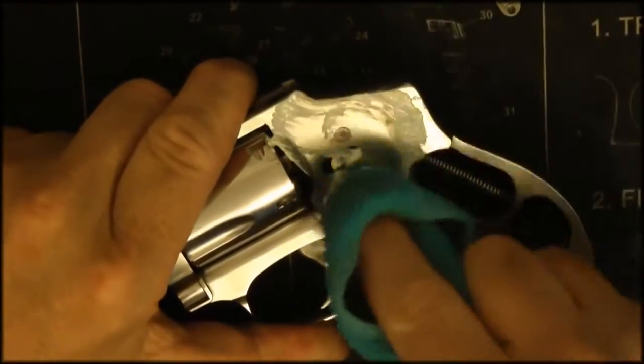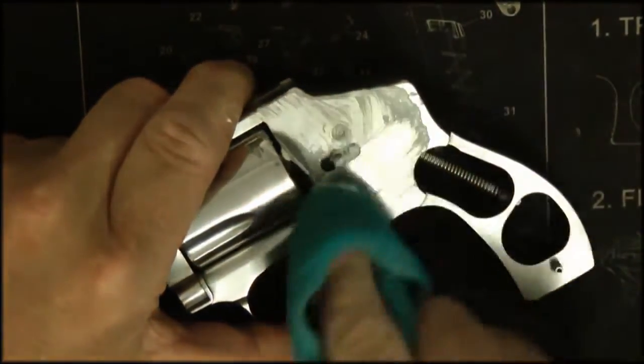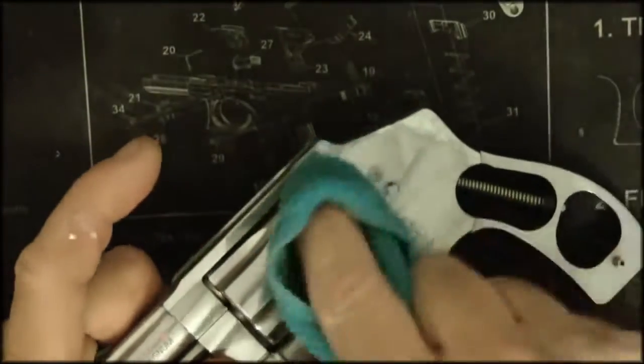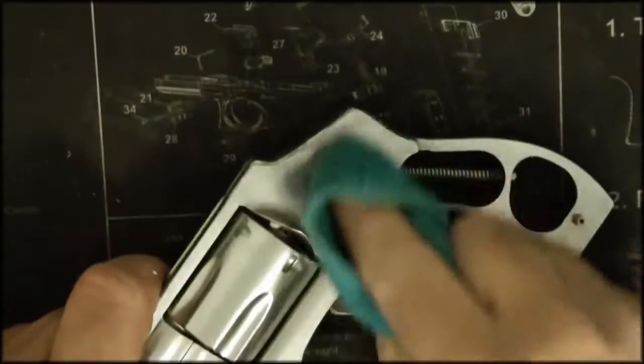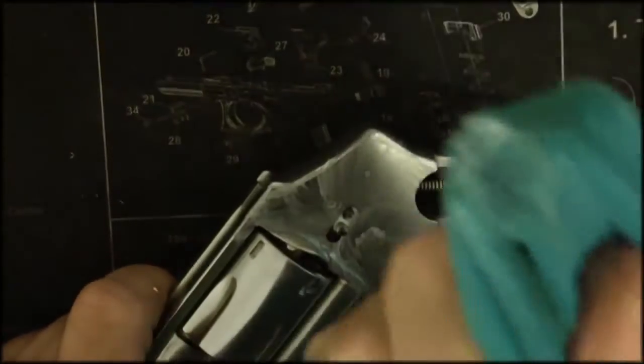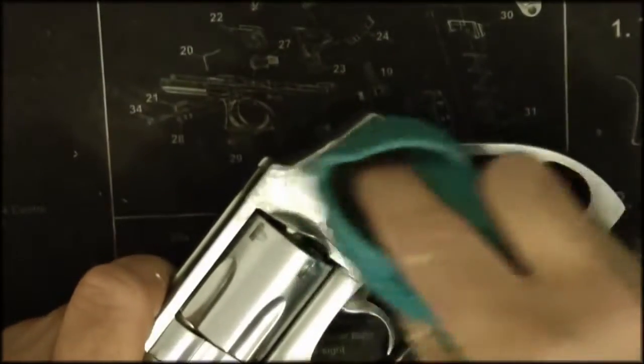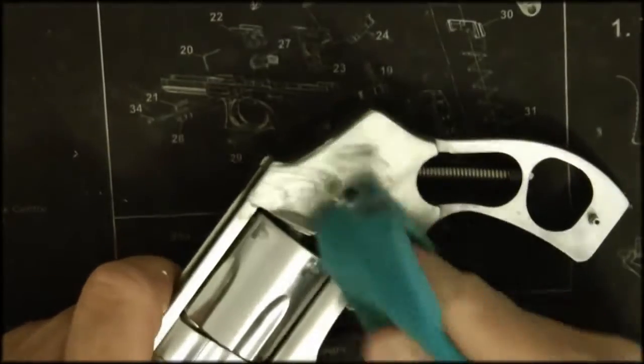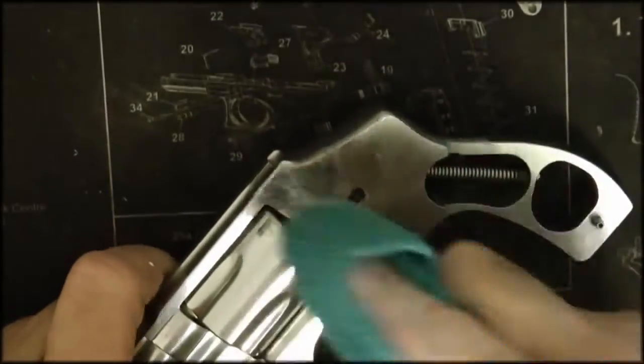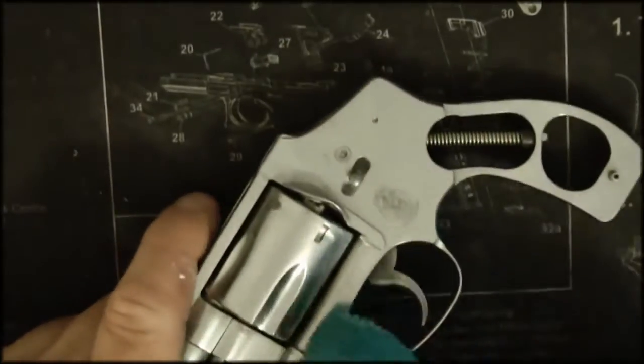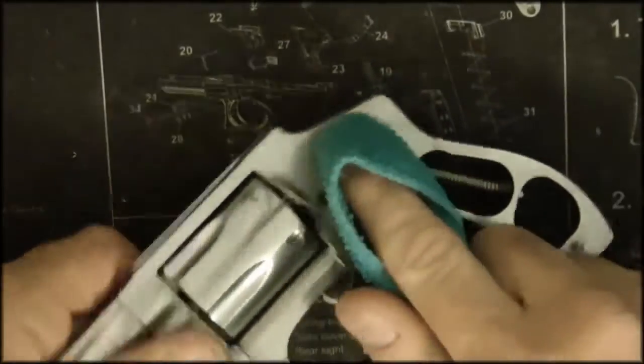You just take it and rub it kind of on the gun like this. It really doesn't matter, just rubbing. You'll see it starts getting dirty because it's taking some of the stainless off. And you just basically work the gun like this.